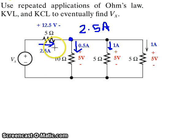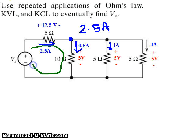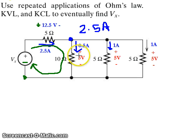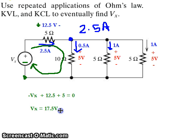For the last part, we know the voltage drop across the left 5 ohm resistor and across the parallel combination. We can use Kirchhoff's voltage law around this loop to figure out Vx. Starting from this node, the first voltage we encounter is Vx with a negative polarity, so: minus Vx plus 12.5 volts plus 5 volts equals 0. Solving this, the voltage source Vx is equal to 17.5 volts.